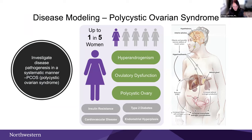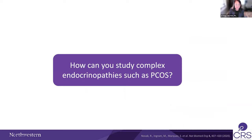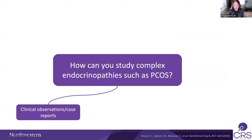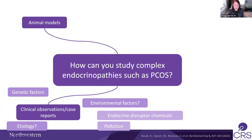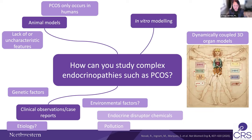A bit more about polycystic ovarian syndrome: it's associated with hyperandrogenism, ovulatory dysfunction, and polycystic ovary. It's associated with insulin resistance, cardiovascular disease, and type 2 diabetes. It also puts women at risk for endometrial cancer and there's endometrial hyperplasia going on. The question is: how do you study a complex endocrinopathy like PCOS? There are so many factors and tissues involved. What is the etiology? Are there environmental factors involved? There are no good animal models. The challenge is how to do in vitro modeling of such a condition.